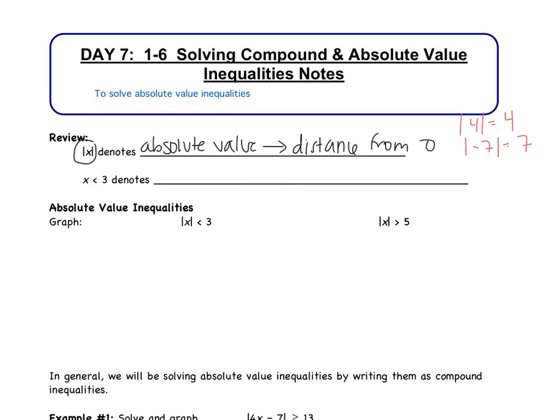The second review concept is x is less than 3, which denotes an inequality. On a number line, it would be everything less than 3, so there's more than one solution. We're going to put these two concepts together — the concept of distance from 0, and the concept of inequality — so we're going to look for a range of values. There are two different inequalities: less than and greater than.